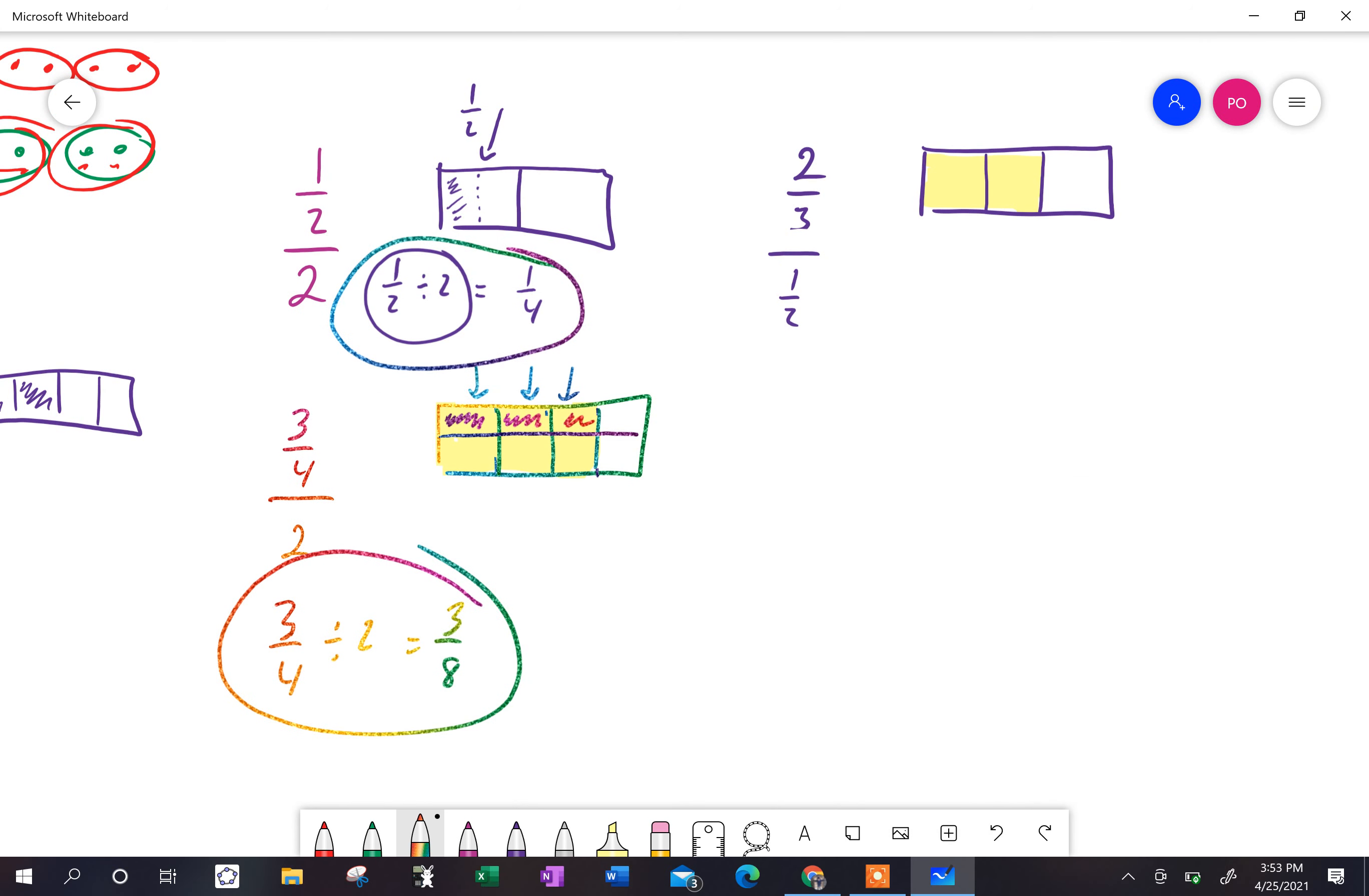If I have two thirds and I divide it by one half, well, here's two thirds. If I divide it into one half, I end up with, okay,